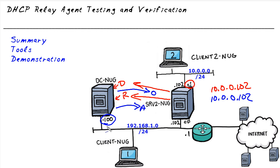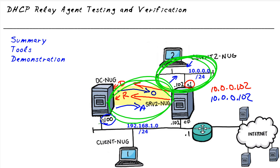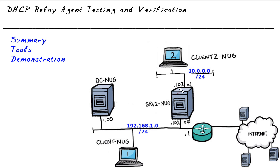Those four messages between the relay agent and the client are all going to have the destination address of a broadcast, as we saw earlier in the normal process for discover, offer, request, and acknowledgement. So to reaffirm: between the client and relay we're looking at broadcast traffic, and between the relay and DC-Nug we're looking at unicast traffic. I also wanted to point out one specific field inside a DHCP message.